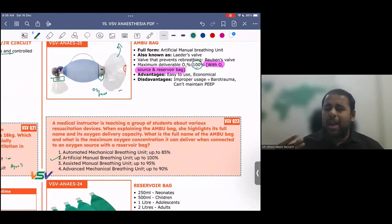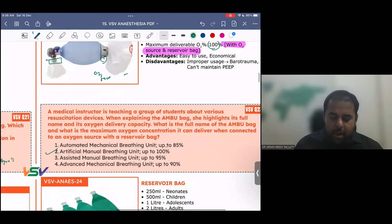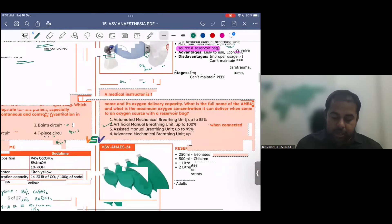Usually we may oversee, okay, Ambu, I remember artificial manual breathing. When you see many things like automated, artificial, assisted, advanced mechanical manual, and all these things, you may get confused. So, few things you consolidate, well, okay, it's an artificial manual breathing unit.